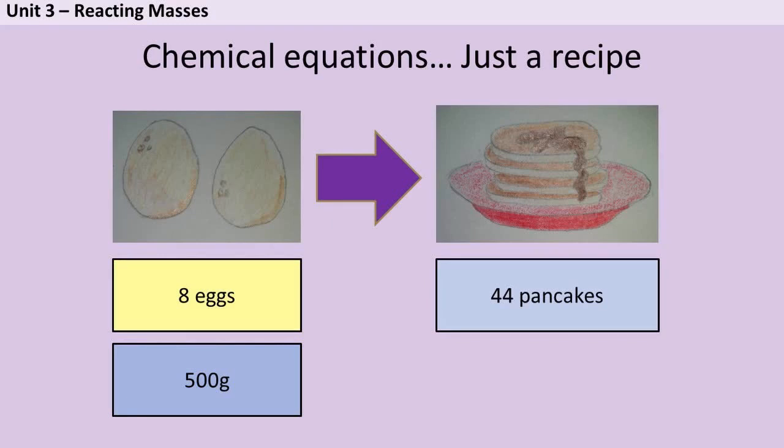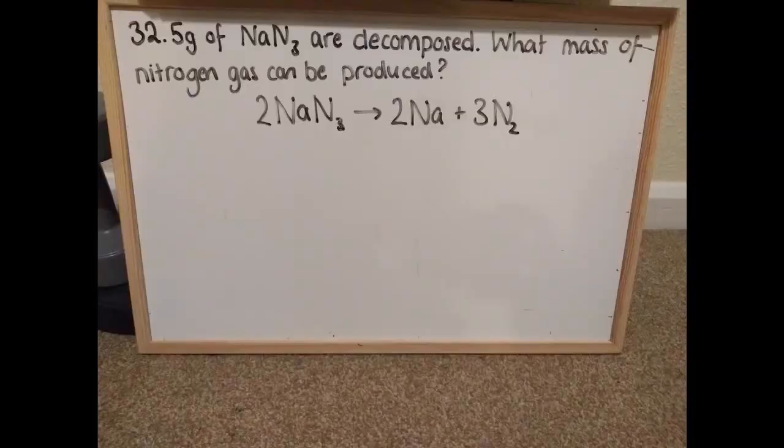That's all reacting mass calculations are. They're putting a mass into a usable format and then using a recipe to figure out how many of something else you'll make. Let's take an example. The question tells me that 32.5 grams of sodium azide is decomposed which means broken down. I need to work out what mass of nitrogen is released. They've given me the balanced symbol equation.